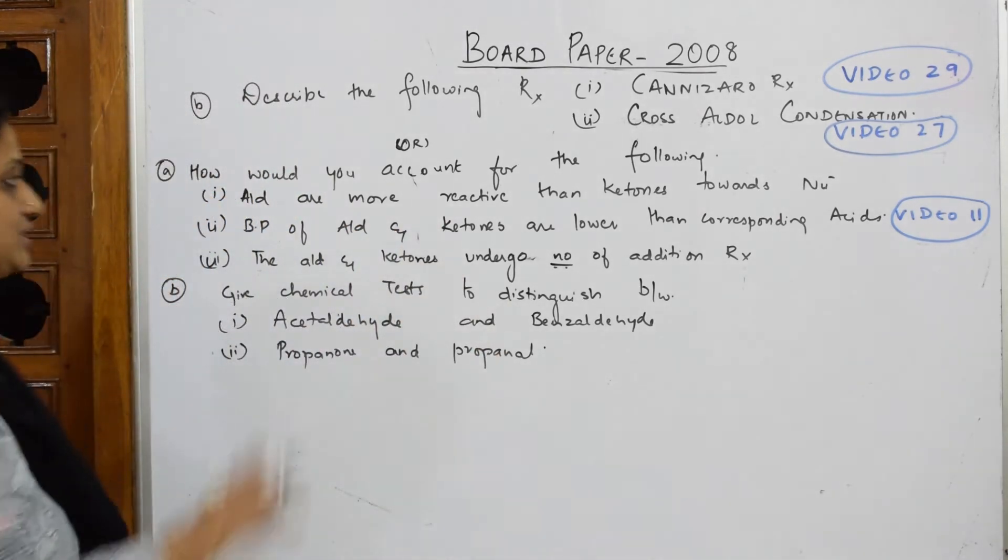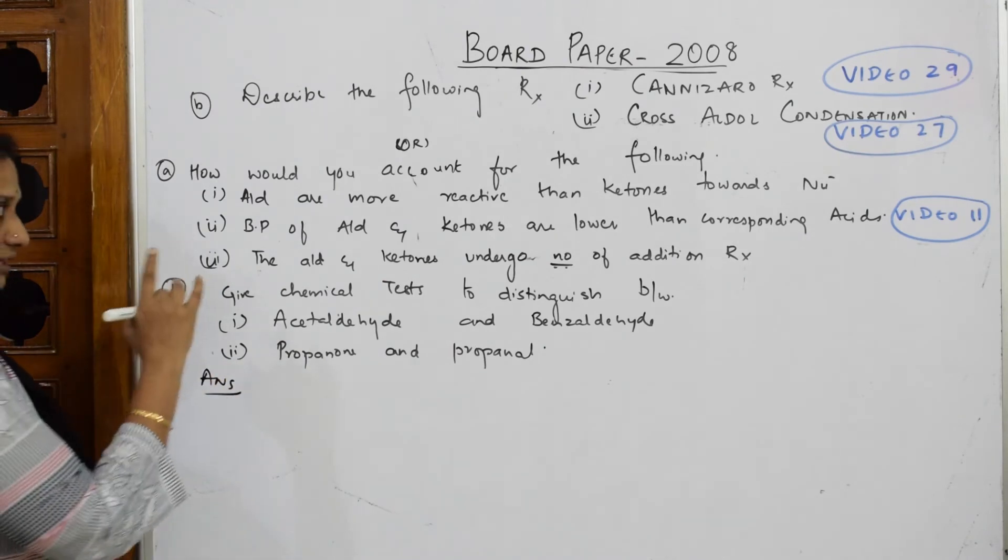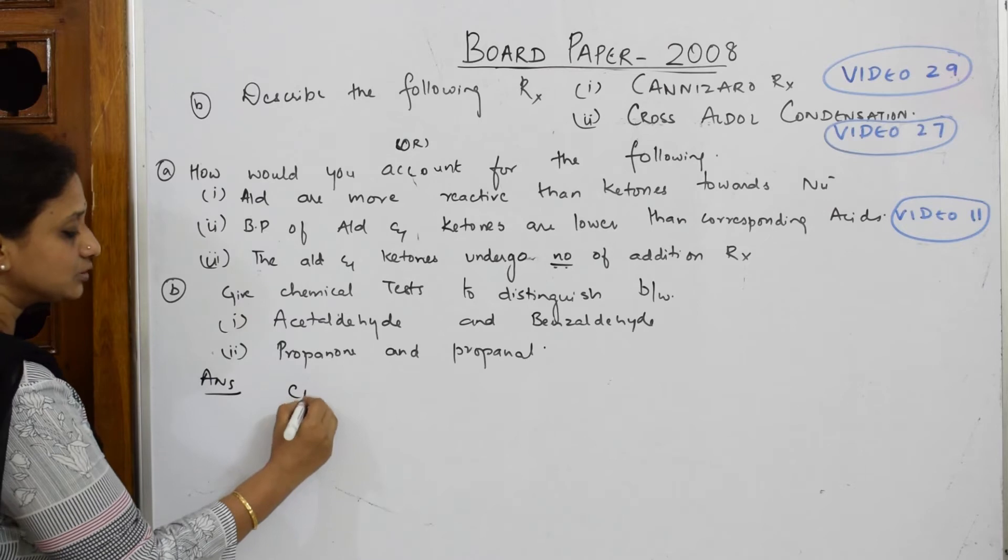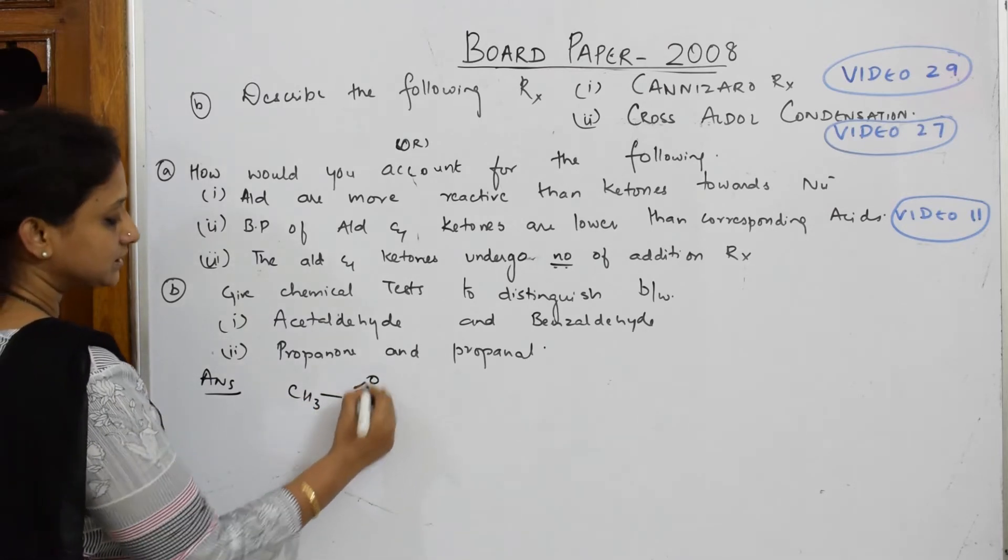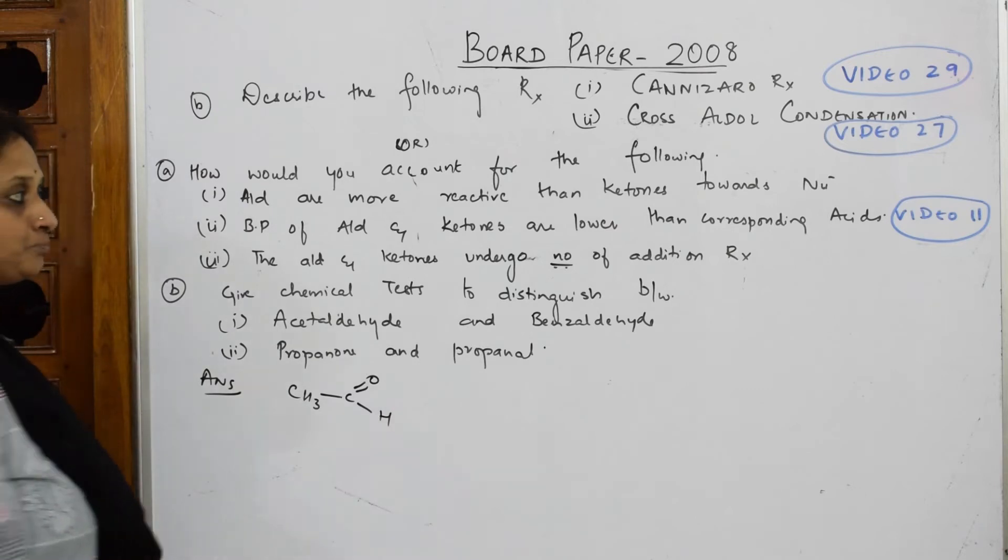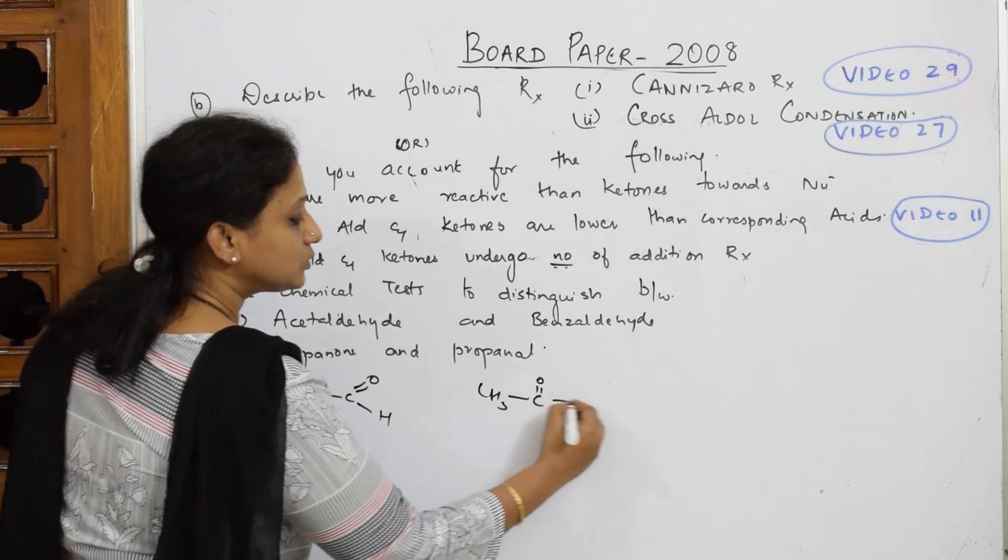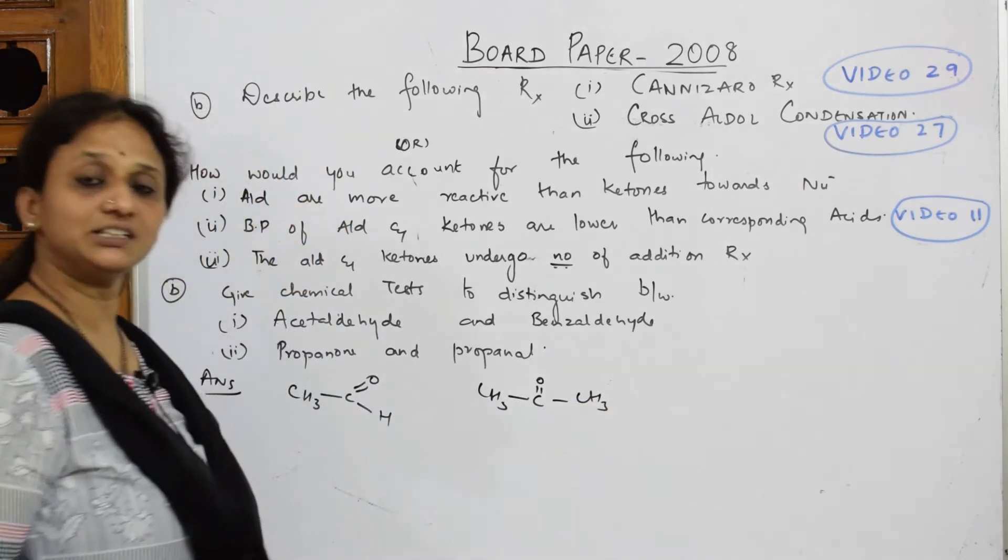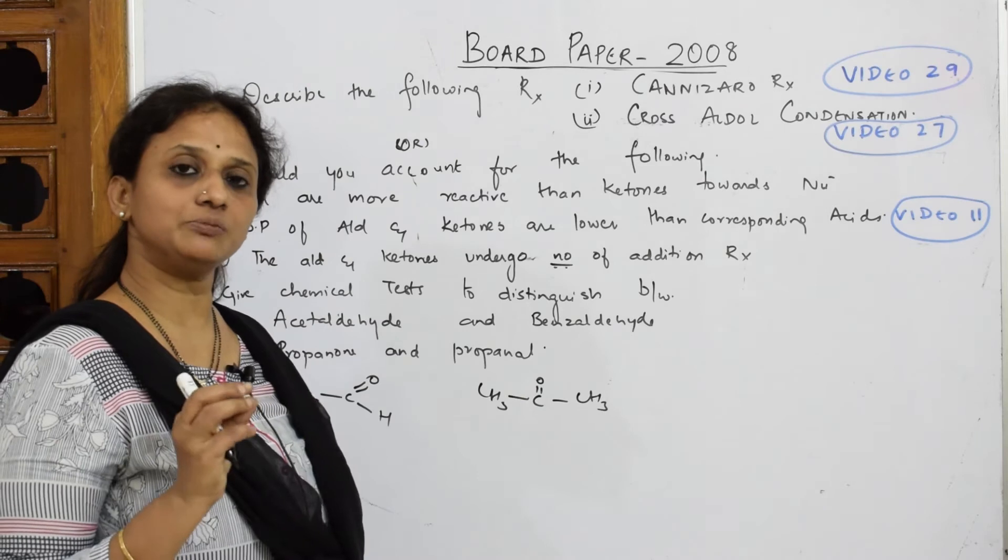The first question: aldehydes are more reactive than ketones towards nucleophiles. They want you to write the reason. Let's write the answer. When I'm writing the answer, aldehydes are more reactive, so let's write the formula for aldehydes. This is your formula for aldehyde, and for ketone, this is your formula.